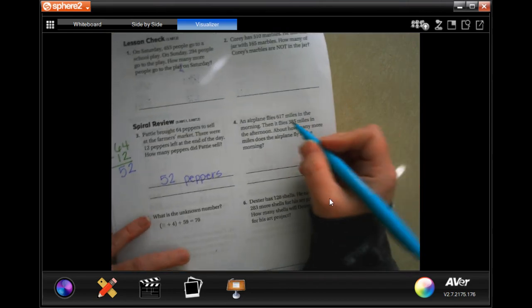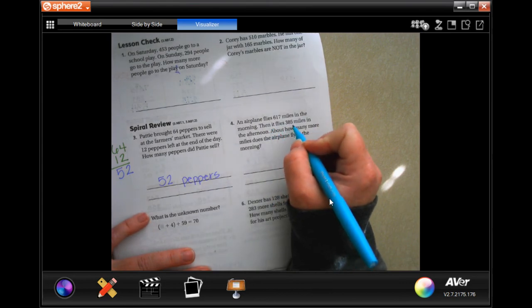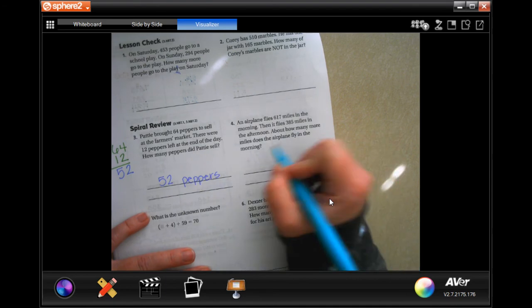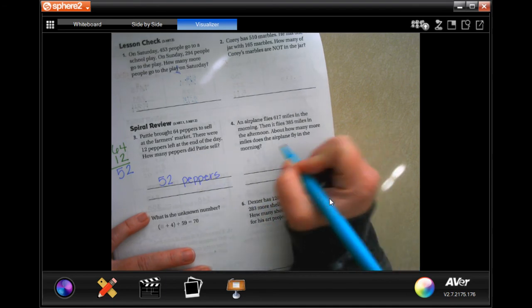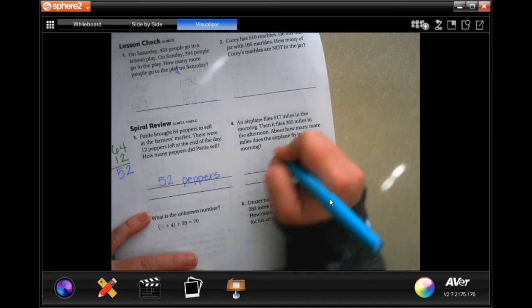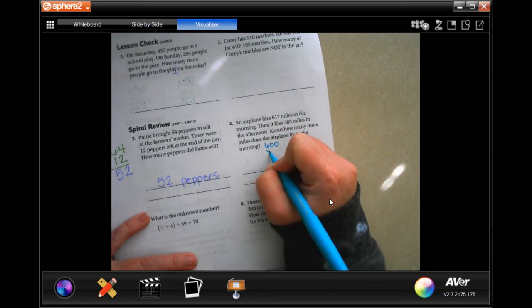All right, an airplane flies 617 miles in the morning. Then it flies 385 miles in the afternoon. About how many more miles does the airplane fly in the morning? So, 617, we would round to 600. 385, we would round to 400.